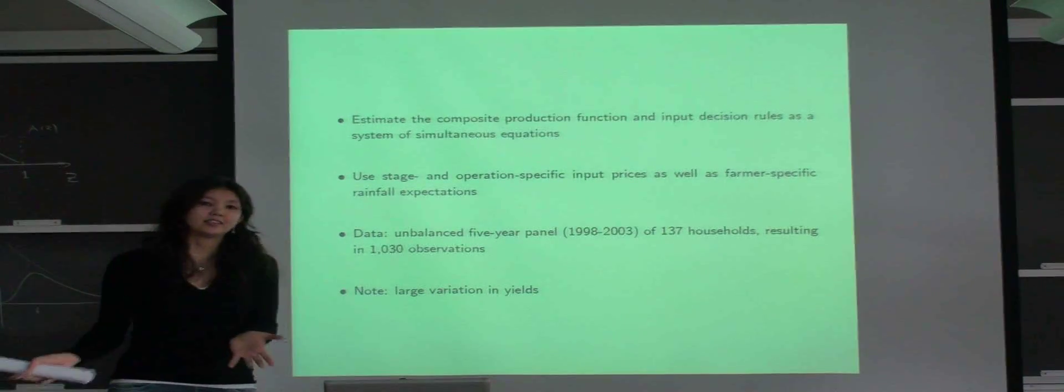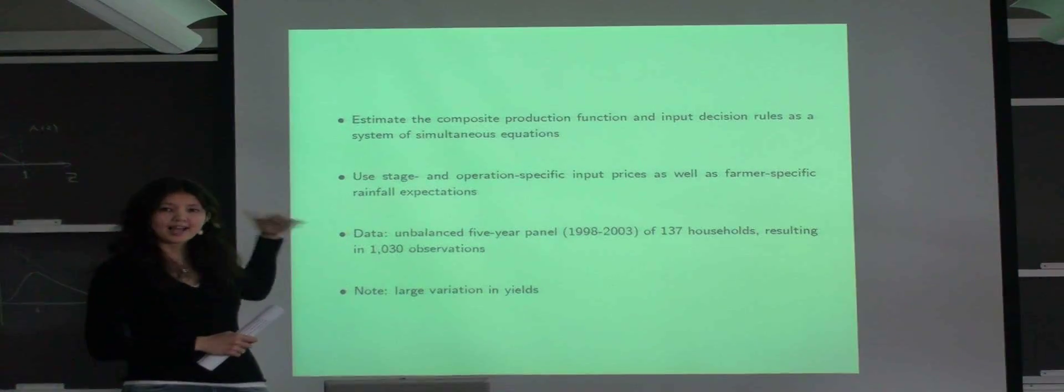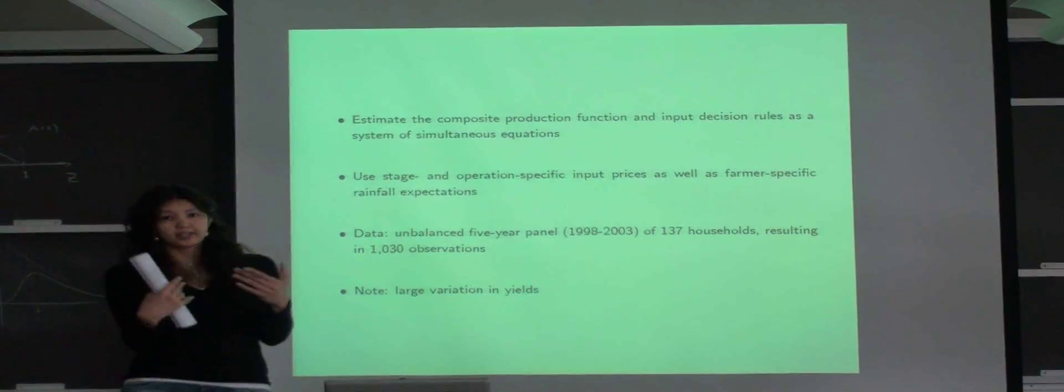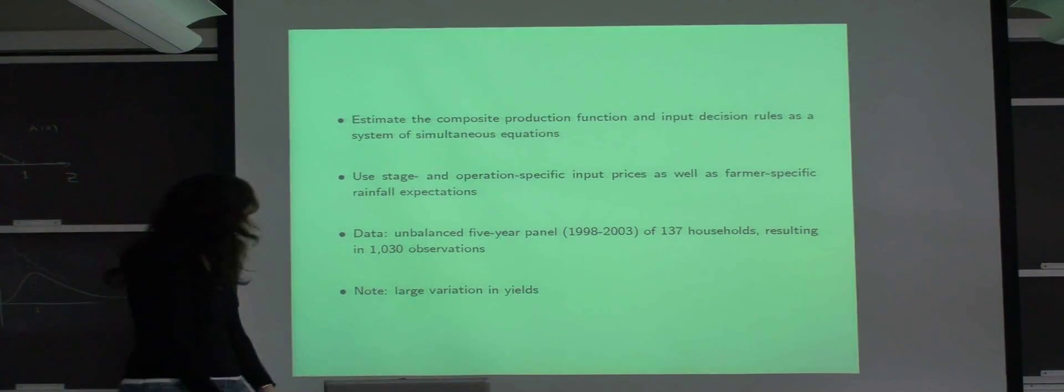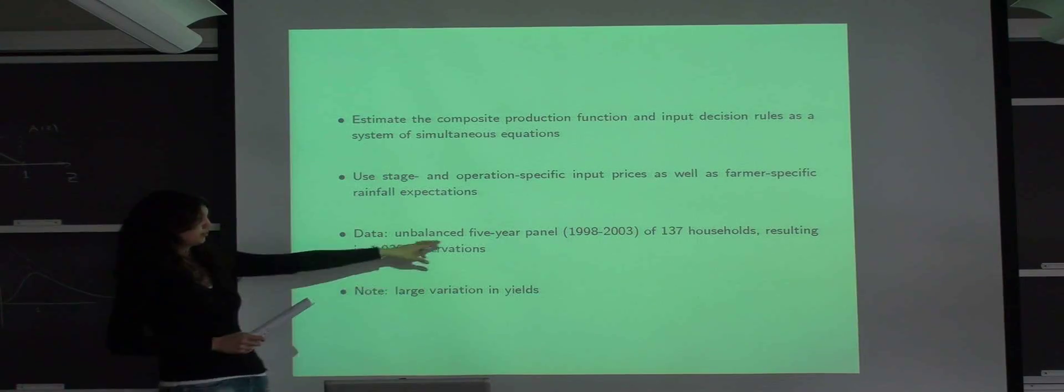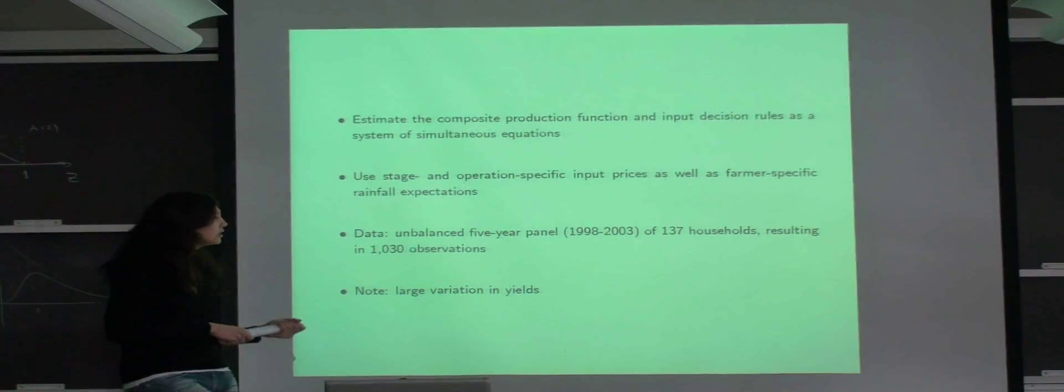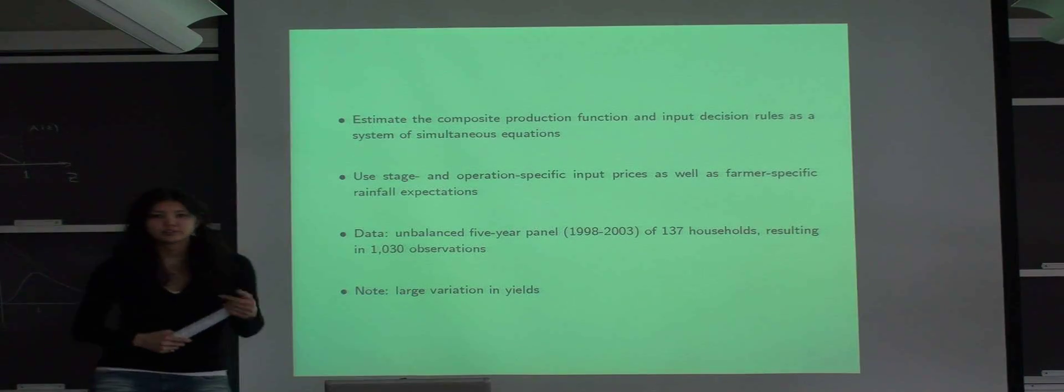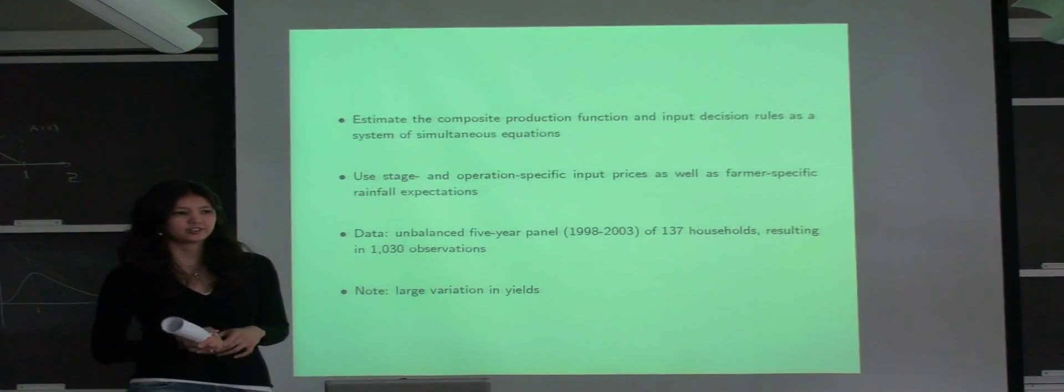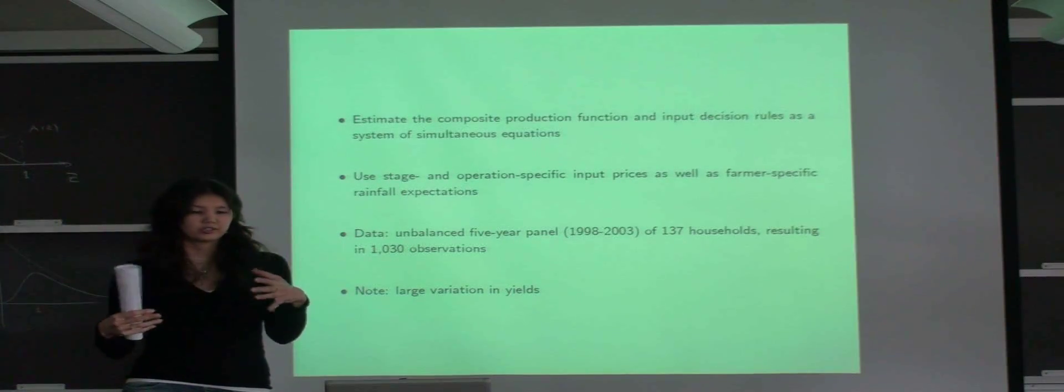Because of these differences in timing of operations, although rainfall is an aggregate shock at, say, village level, farmers' expectations of that aggregate shock will be different. We use unbalanced five-year panel. Five-year means five rice growing cycles, which kind of spill into the January of the following calendar year. 437 households in a Thai village in Thailand province of Sisakit, which is in northeastern part of the country, is predominantly rural and relatively poor.